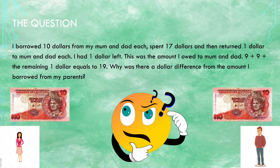The question: I borrowed $10 from my mom and dad each, spent $17, and then returned $1 to my mom and dad each. I had $1 left. This was the amount I owed to mom and dad. 9 plus 9 plus the remaining $1 equals 19. Why was there a dollar difference from the amount I borrowed from my parents?